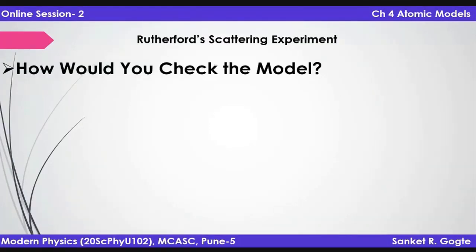Let me ask you this — how would you check the atom? Let me take you back to this period in history. If you were the experimental physicist who wanted to check whether the atom can have the structure as proposed by Thomson or not, what would you do? How could you do it?